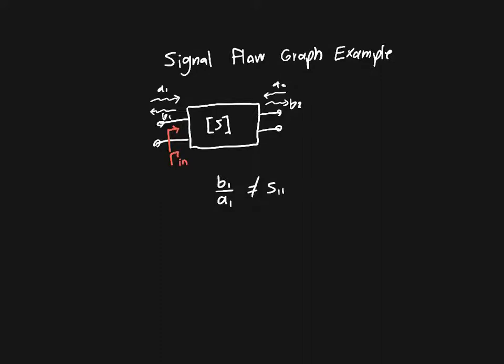Because S11 only accounts for the portion of A1 that's reflected. We also need to account for A2, so it's S11 plus some other function that we don't know at this point.